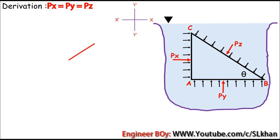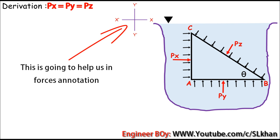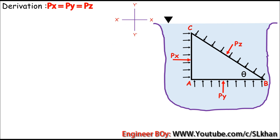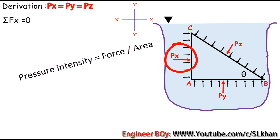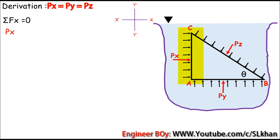We'll represent the annotation with respect to this directional map, and apply the equilibrium equations — the summation of forces in X and Y direction must be zero. Let's take the summation of forces in X direction equals zero. We'll sum the forces in X direction: PX is the pressure intensity in units of force divided by area, so we multiply PX with the area of side AC.